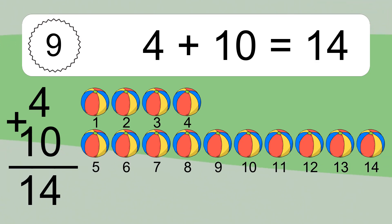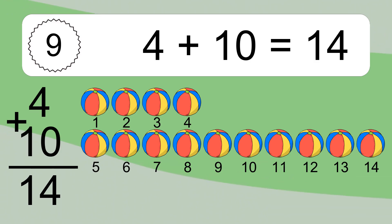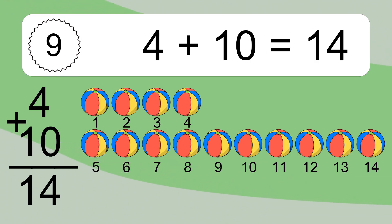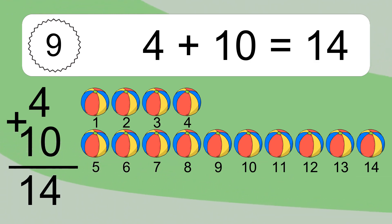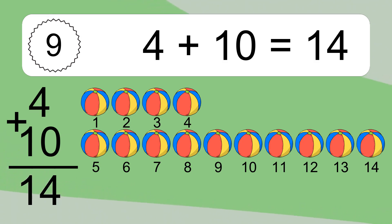4 plus 10 equals what? 4 plus 10 equals 14. Let's count it: 1, 2, 3, 4, 5, 6, 7, 8, 9, 10, 11, 12, 13, 14.